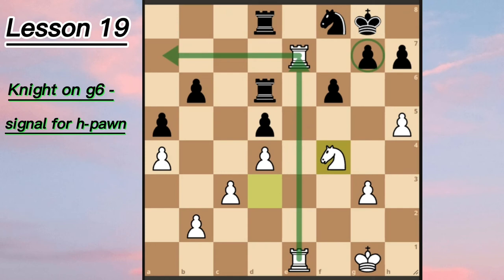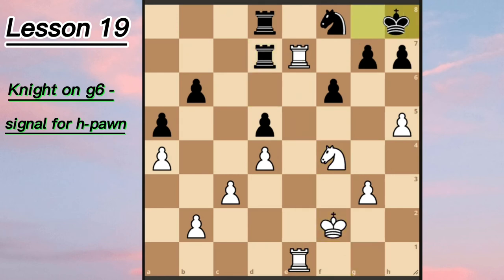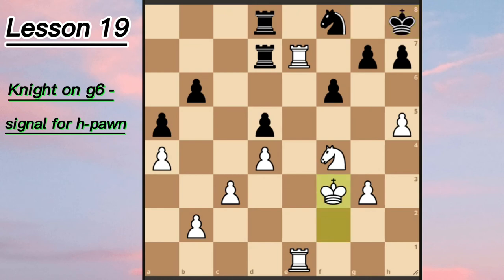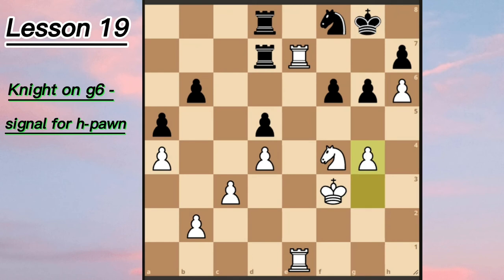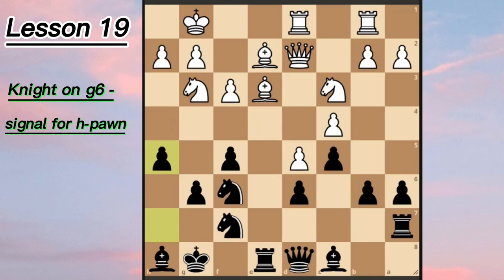Even if Black protects the last rank, it's very difficult to move — the knight can't move, the rook can't move, pawns can't move. It's like a zugzwang. White would just keep improving their position and sooner or later outplay the opponent. Against Botvinnik, of course, Black preferred to resign.